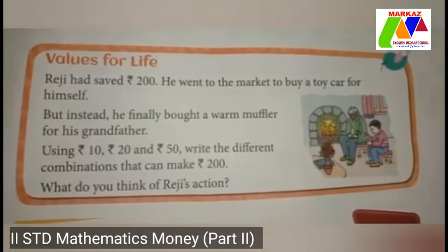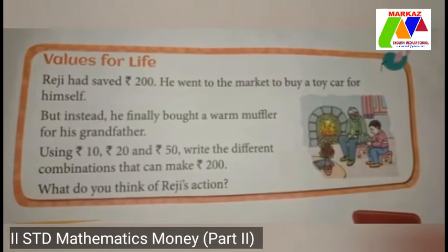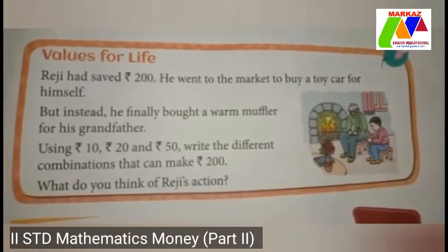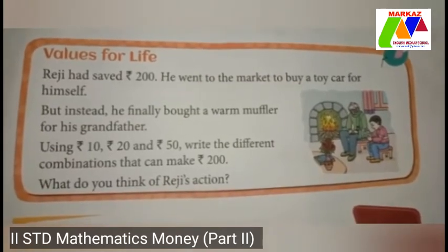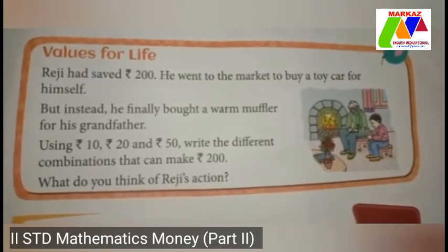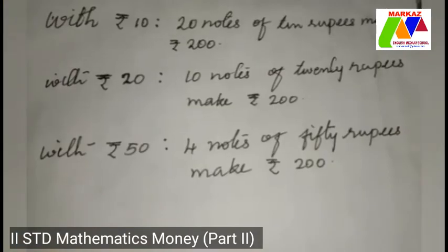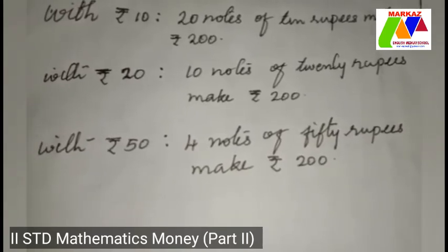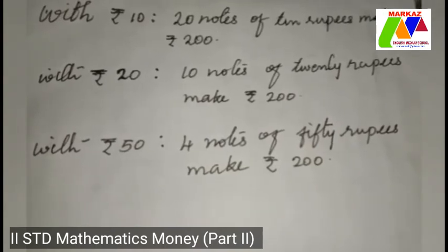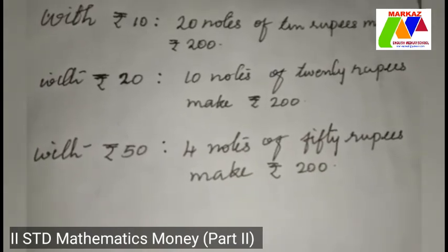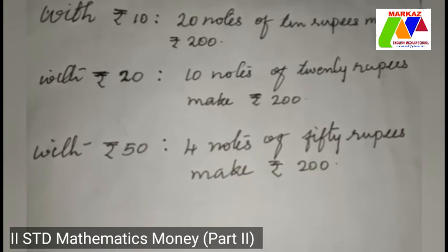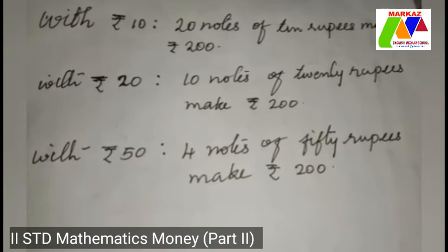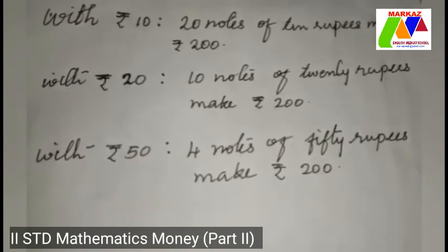Values for life. Rajee has saved two hundred rupees. He went to the market to buy a toy car for himself, but instead he finally bought a warm muffler for his grandfather. Using rupees ten, rupees twenty, and rupees fifty, write the different combinations that can make rupees two hundred. With rupees ten, twenty notes of ten rupees make two hundred rupees. With rupees twenty, ten notes of twenty rupees make two hundred rupees. With rupees fifty, four notes of fifty rupees make two hundred rupees. Combinations with all three types of notes are also possible. Rajee has shown that he cares for his grandfather.